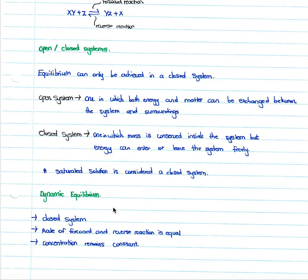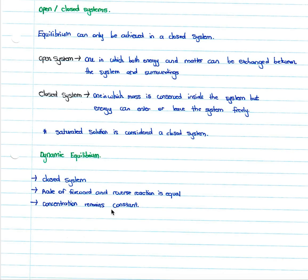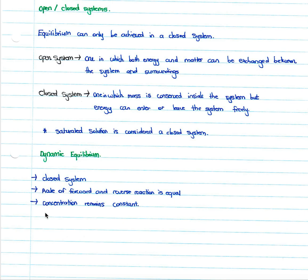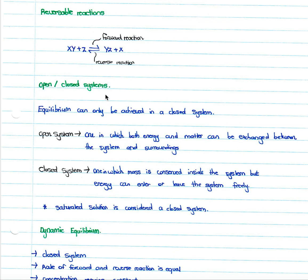There are three things we know about dynamic equilibrium. Firstly, it only takes place in a closed system. Secondly, the rate of the forward and the reverse reaction are equal — meaning the rate at which the forward reaction produces products is equal to the rate at which the reverse reaction takes place.